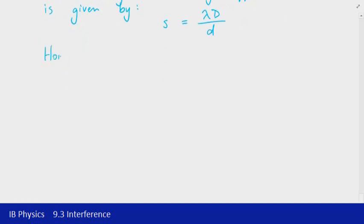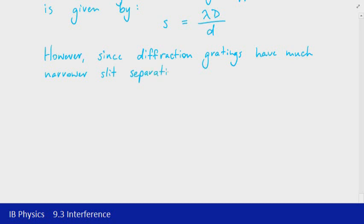Moving back now to diffraction gratings, we have a fairly significant difference. And that difference is that the separation d, lowercase d, is much, much smaller. So since diffraction gratings have much narrower slit separations, that means that the angular separation of the bright regions, or the maxima, is now much larger. And that means that the small angle approximation no longer applies.